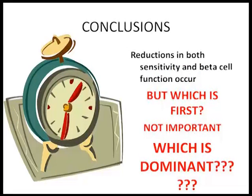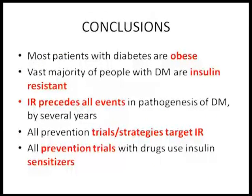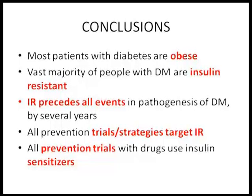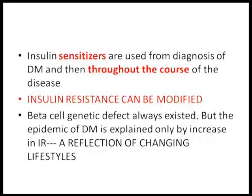The conclusion is that it does not matter which came first, but which is dominant. Most patients with diabetes are obese. The vast majority — almost 92% — are insulin resistant. Insulin resistance precedes all events in the pathogenesis of diabetes by several years. All prevention trials and strategies target insulin resistance, using metformin and sensitizers. Insulin resistance is something you can deal with — it is dominant, you can reduce it. A sensitizer is used throughout the entire course of the disease; you do not withdraw metformin at any point.